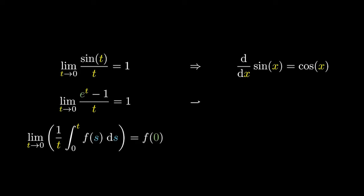Finding the limit of e to the t minus 1 over t equaling 1 actually helps us derive that the derivative of the exponential is itself the exponential.